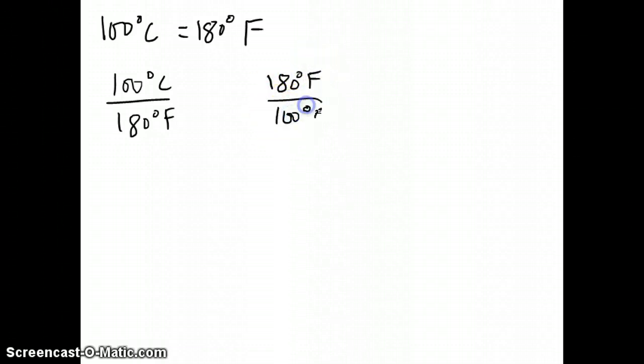So we just talked about the fact that for every 100 degrees unit in Celsius, there's 180 degrees Fahrenheit. So this is our conversion factor. In other words, you can say that for 100 degrees Celsius, we have 100 degrees Fahrenheit, or you can say that for 180 degrees Fahrenheit, we have 100 degrees Celsius.